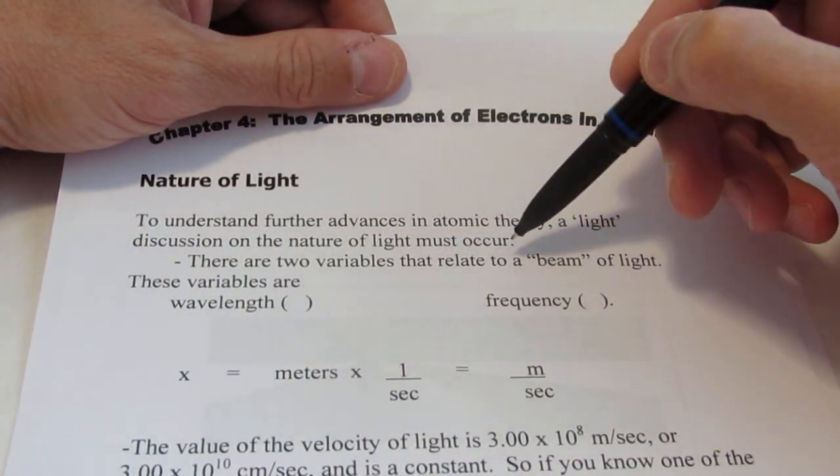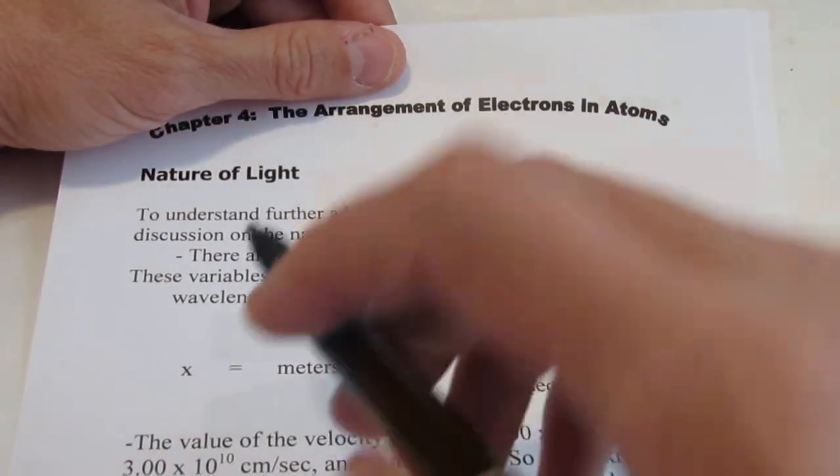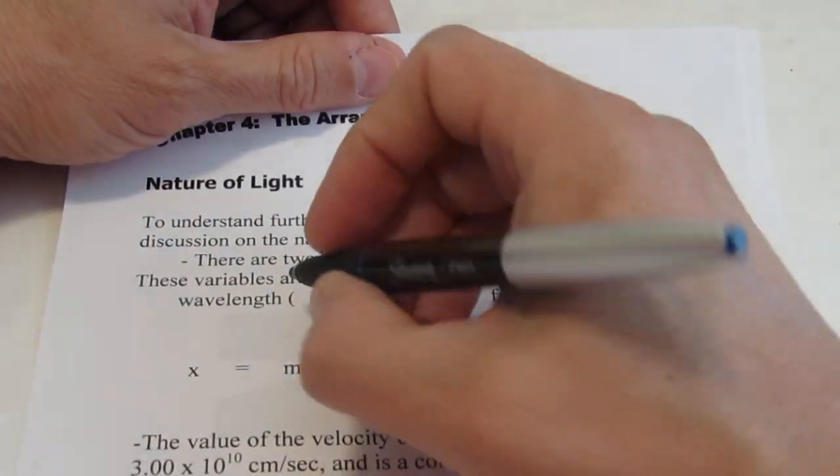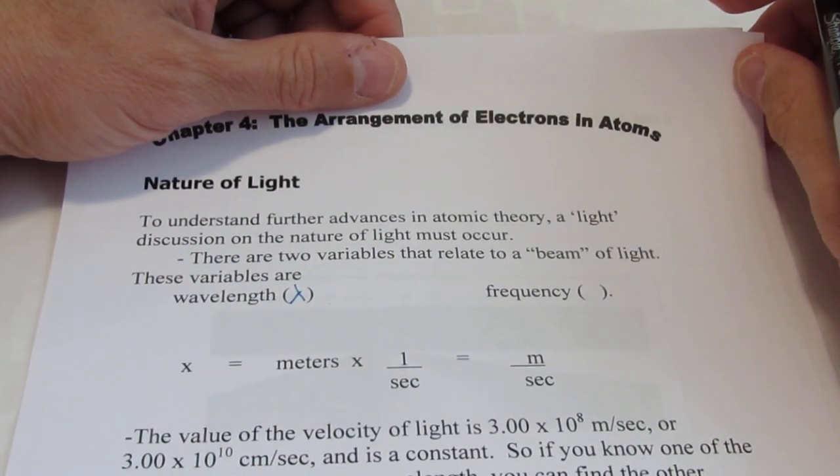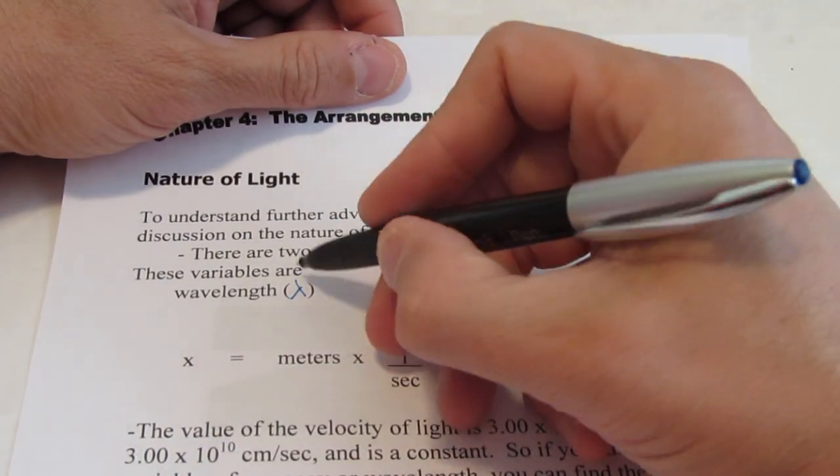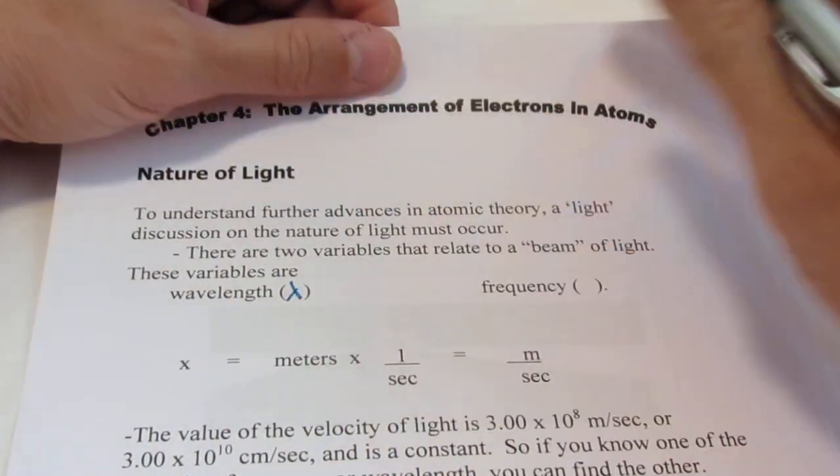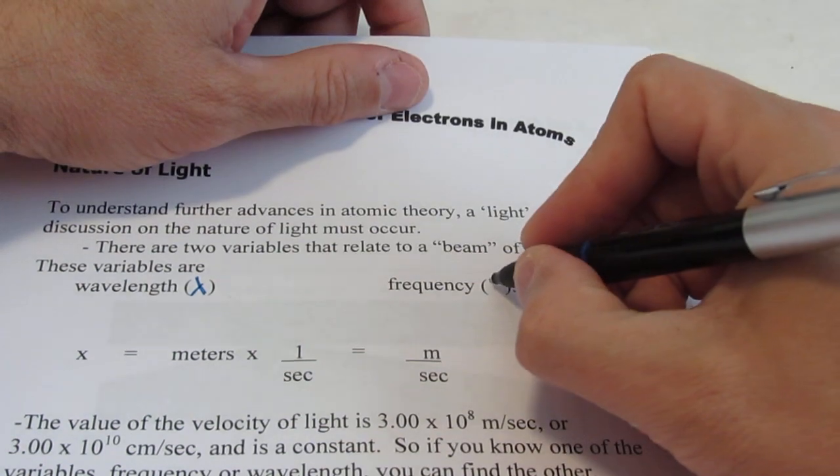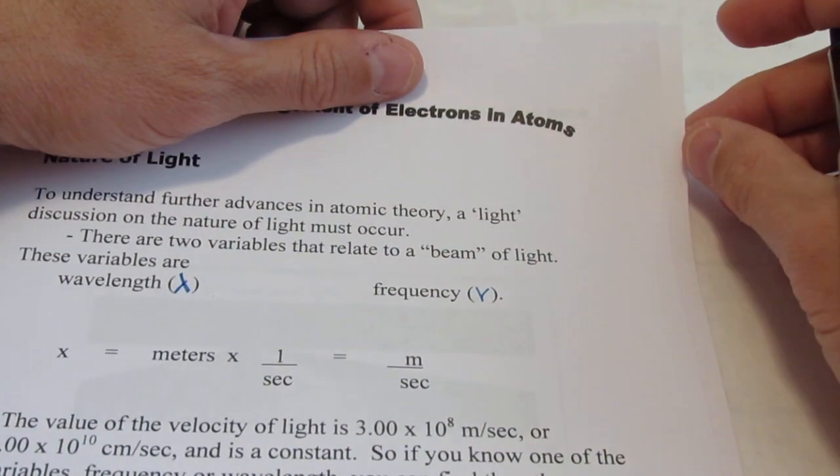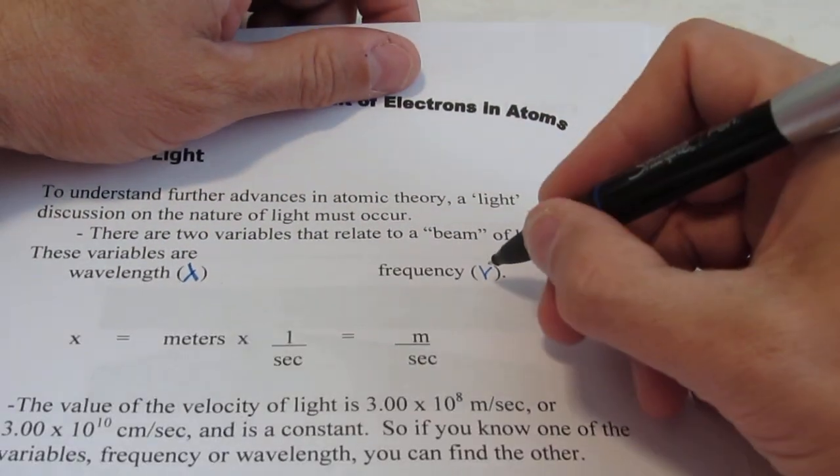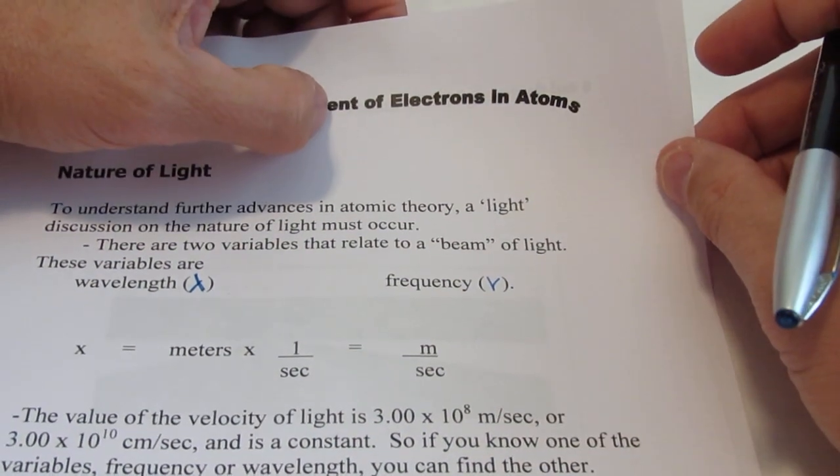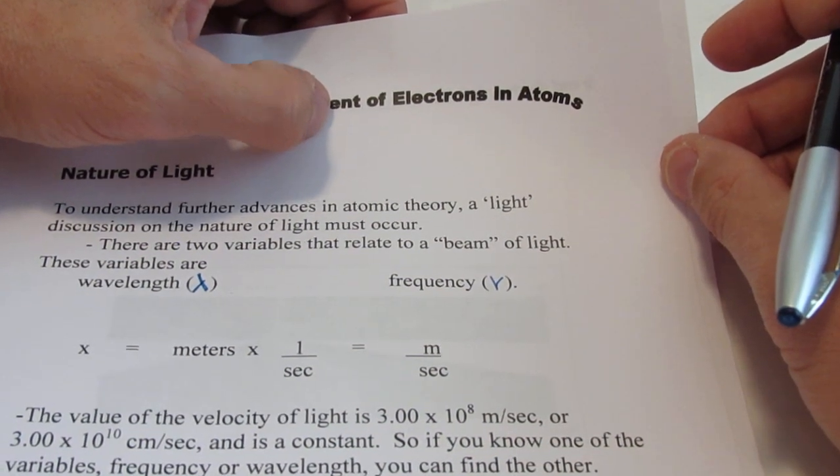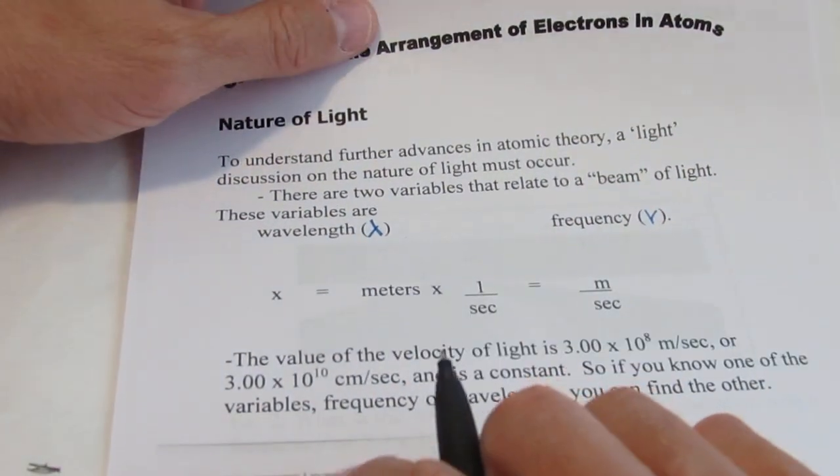Now there are two variables that relate to a beam of light. These variables are wavelength, which is symbolized by the Greek letter lambda. Sort of kind of looks like an upside down Y, doesn't it? Lambda. And frequency, which is symbolized by the Greek letter nu, which sort of looks like a seagull that you might draw if you're a really ridiculously bad artist.